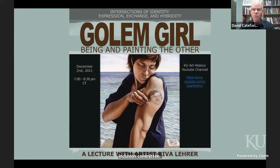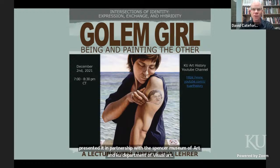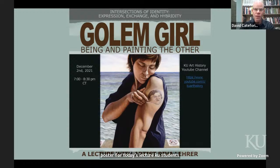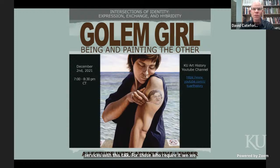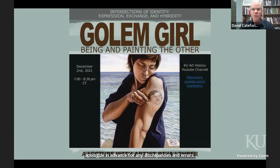It is sponsored by the Franklin Murphy Lecture Fund. We present it in partnership with the Spencer Museum of Art and KU Department of Visual Art. The graduate students and I want to thank Art History Department Office Manager Lisa Klor for all of her organizational help. I acknowledge the creator of the poster for today's lecture, KU student Cormac Palmer. Unfortunately, we are not able to offer ASL interpretation services with this talk. For those who require it, we offer auto-generated closed captioning services located at the bottom of the video. We apologize in advance for any discrepancies and errors. Additionally, all artworks and images presented in this talk will be accompanied by a textual description in the live chat, available as the images appear on screen.